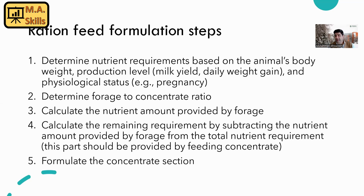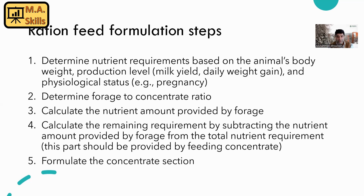After understanding their nutrient requirements, we need to decide how much forage and how much concentrate we are going to use in the diet. I've already explained different methods to calculate the forage-to-concentrate ratio, and I'll post the link for that video. After calculating the ratio, we need to understand how many nutrients are coming from the forage section, then subtract those nutrients from the total nutrient requirements to see how much we need to provide through concentrate.